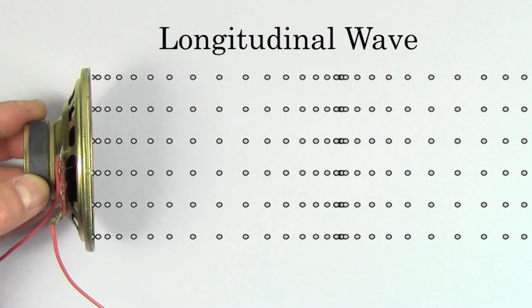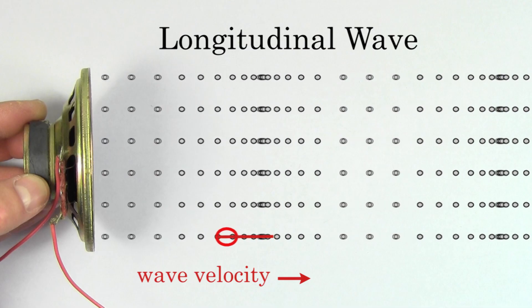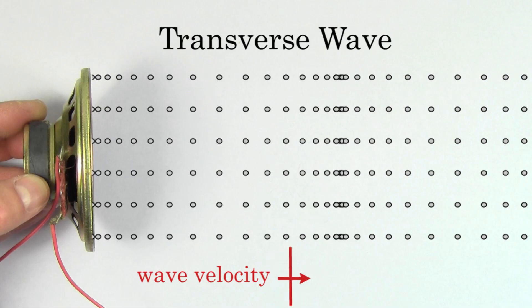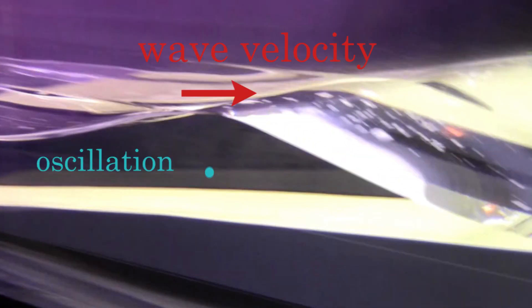We call sound a longitudinal wave because the wave is traveling parallel to the line traced out by the oscillations of the medium. The other type of wave is a transverse wave. Transverse waves happen when the wave velocity points perpendicular to the oscillations of the medium. Waves on a string or waves on the surface of water are examples of transverse waves.